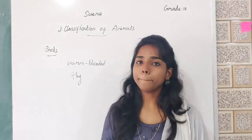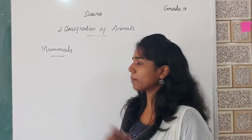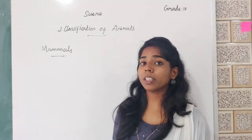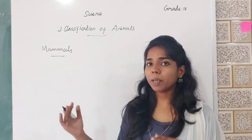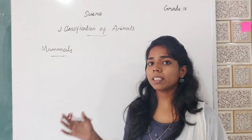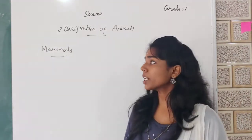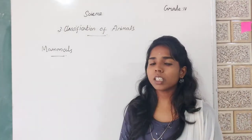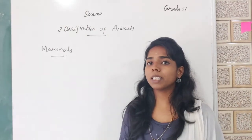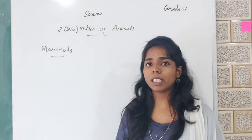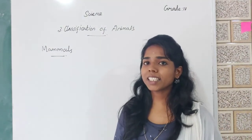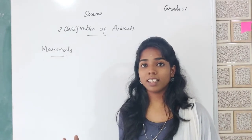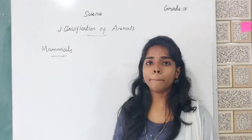The next group is mammals. What does it mean by mammals? Mammals are the group of animals that are born from their mother's womb, and the babies drink mother's milk. Such animals are known as mammals. Examples include dog, cat, lion, and human beings also come under mammals.